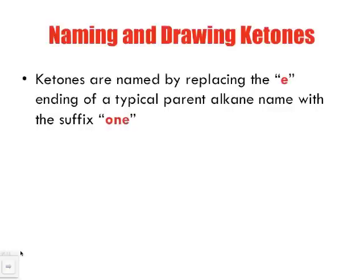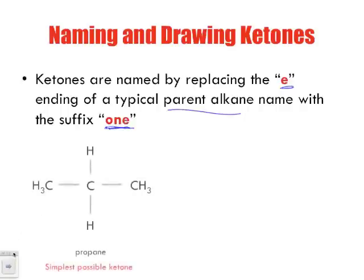Naming and drawing ketones. When naming ketones, we drop that same E that we were dropping for aldehydes, but now we replace it with the suffix -ONE (O-N-E). So we take the parent alkane name, drop the E, and put in -ONE. The simplest possible ketone must have at least a three-carbon chain. Ketones are not at the end — they are somewhere in the middle.